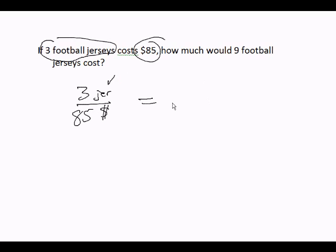So I have jerseys on top, so I need to have jerseys on top on the other side. I have dollars on the bottom, so I have to have dollars on the other side. If 3 jerseys cost $85, that's the first. How much would 9 jerseys? 9 jerseys, and here's the number, the cost.